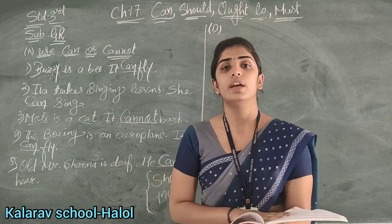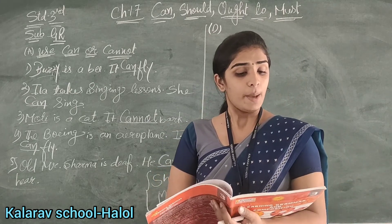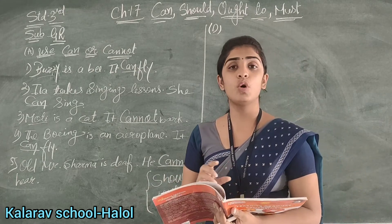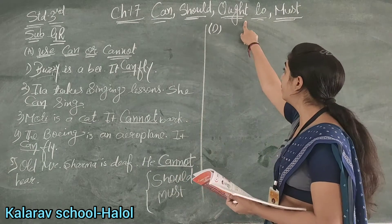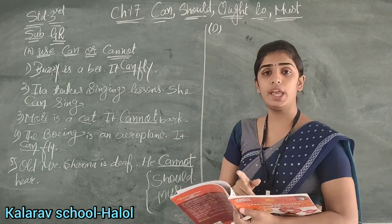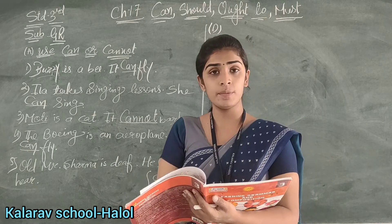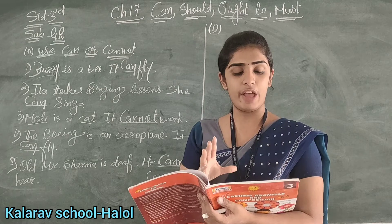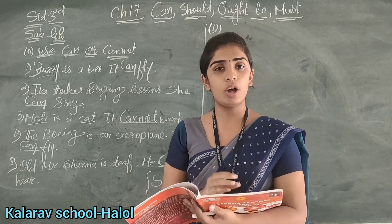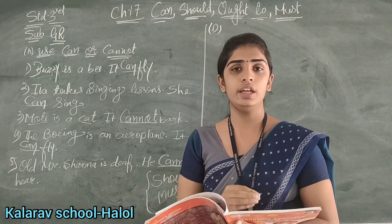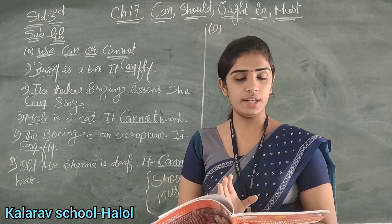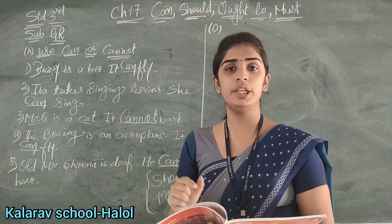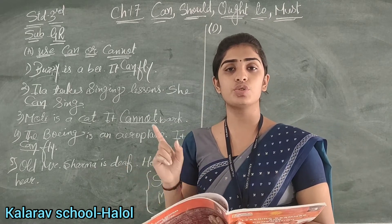Next: Make five sentences telling how a well-mannered child ought to behave. Here we will use 'ought to' to tell how a child should behave and how good-mannered children conduct themselves. A well-mannered child ought to speak softly. A child ought to go to school — meaning a child should always go to school every day.